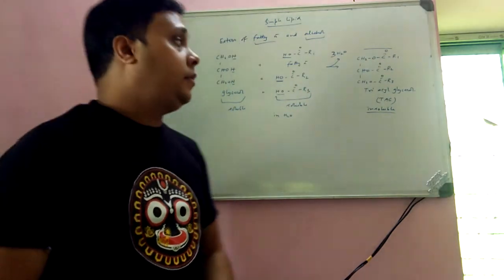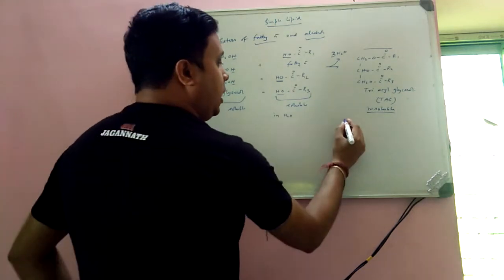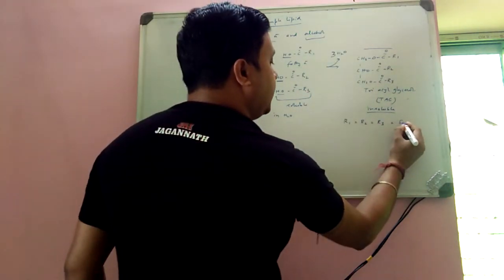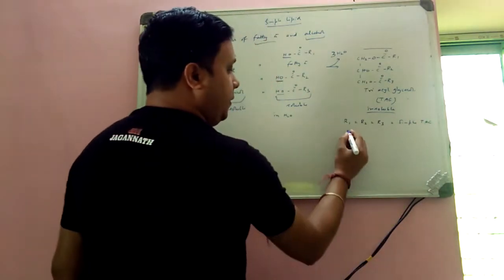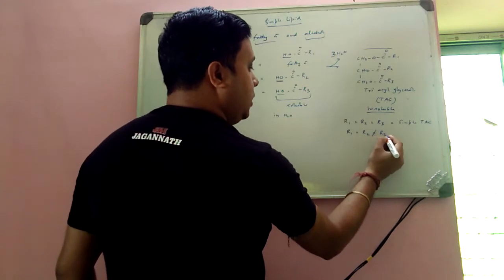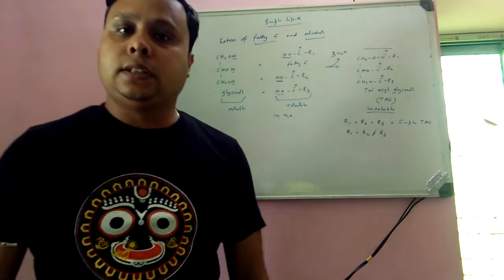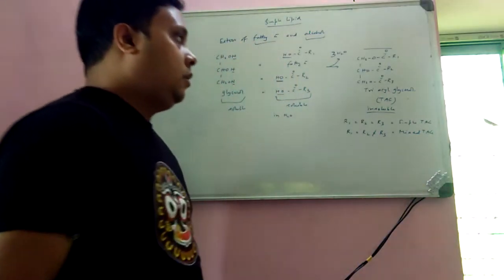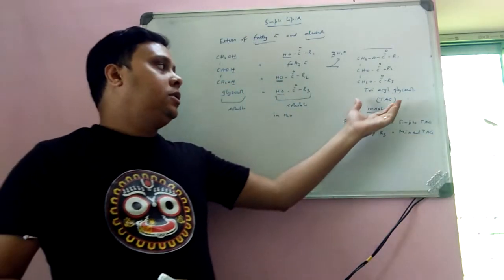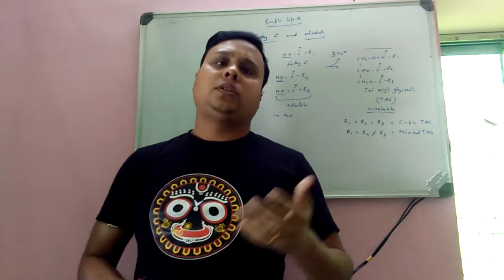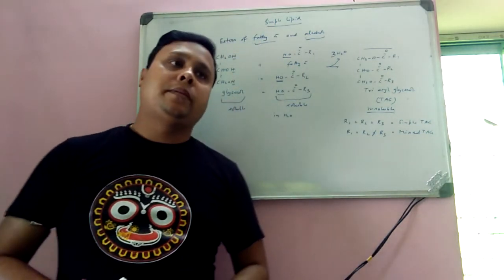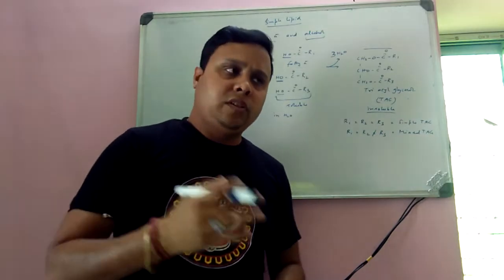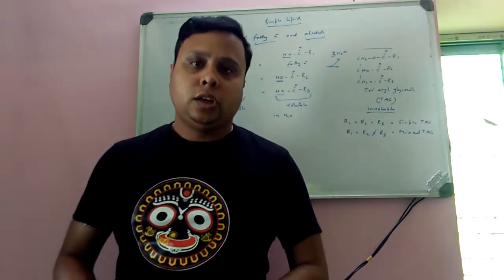Now, if all the fatty acids are the same — that is, R1 equals R2 equals R3 — then the TAG is known as simple TAG. But if R1 equals R2 but not equal to R3, meaning the TAG contains two or more different fatty acids in its structure, it is called mixed TAG. We can compare TAG, being a lipid molecule, with starch, which is made up of many glucose molecules. So we are comparing between one gram of starch and one gram of TAG to see which produces more energy.